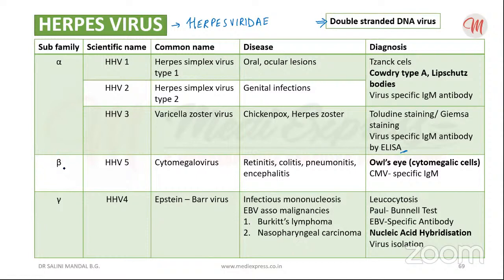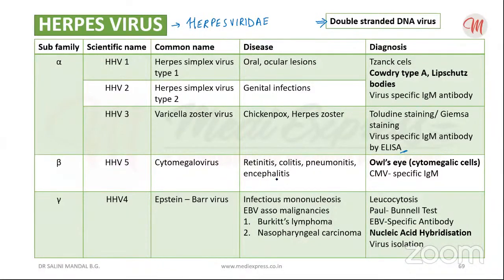Under the beta subfamily, we have human herpesvirus 5 — cytomegalovirus. Cytomegalovirus infections are almost always inapparent, leading to prolonged latency with occasional reactivation. An individual infected with cytomegalovirus carries the virus lifelong. Disease conditions it causes include retinitis, colitis, pneumonitis, and encephalitis. Cytomegalovirus can also be transmitted transplacentally from a mother with latent infection to the fetus.